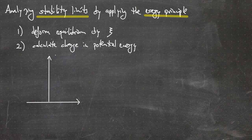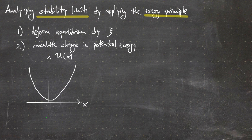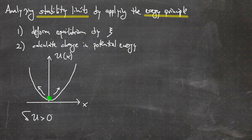To illustrate this, consider a potential energy U(x) as a function of spatial coordinate x forming a well shape. If we have our starting position inside the potential and move in either the negative or positive x direction, we move up the potential wall — the potential energy increases. This means we have a stable equilibrium.